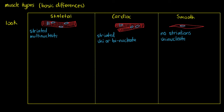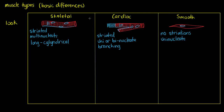We've differentiated them based on striations and nuclei count. Now let's separate them by the overall shape of the cell. Skeletal muscle cells are long and rod-like — a single cell can be up to 30 centimeters long, which is quite remarkable. Cardiac muscle cells are small and branched, coming into direct contact with several other cells at their branching points.